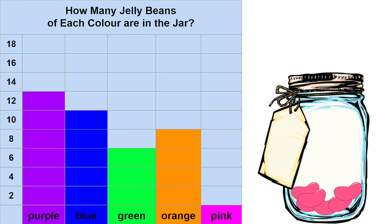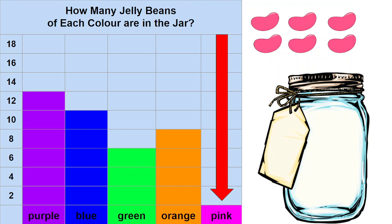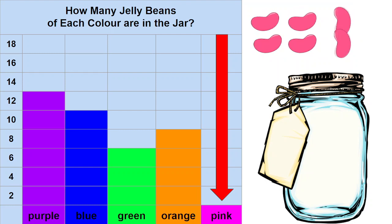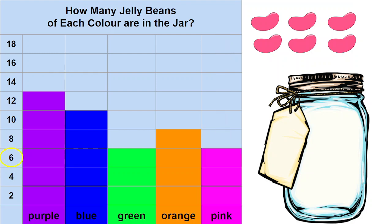Now we only have pink jelly beans left in our jar. Let's take them out of our jar and we will count them together: 2, 4, 6. We'll find the number 6 on our graph and we'll fill in the pink column all the way up to 6.